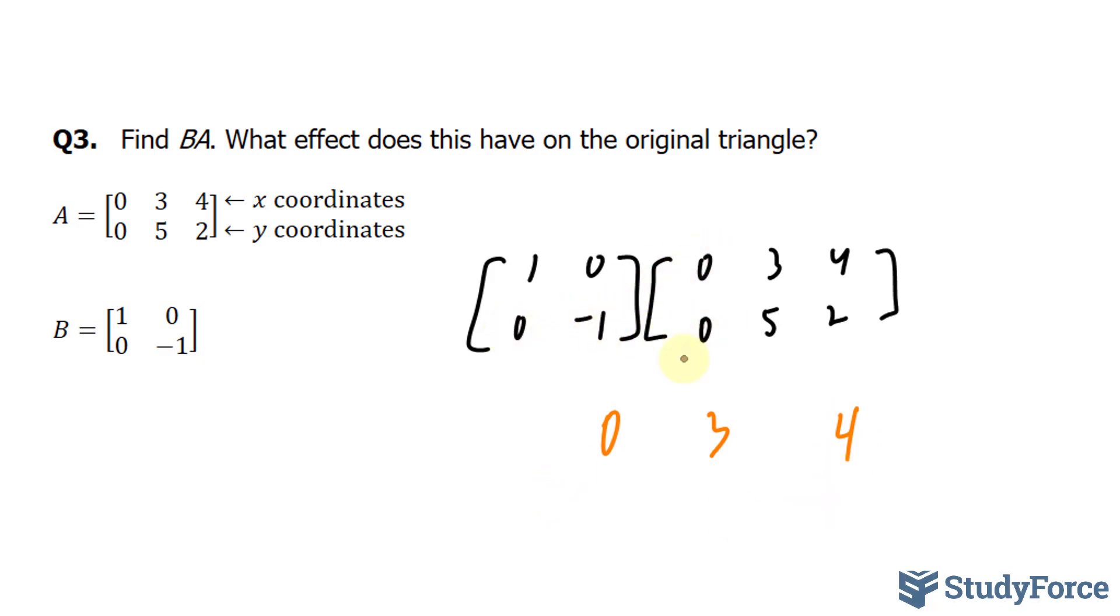And the same thing for all the y-coordinates. 0 times 0 and negative 1 times 0 is 0. 0 times 3, that's 0, plus negative 1 times 5, that's negative 5. And finally, 0 times 4, 0, plus negative 2.